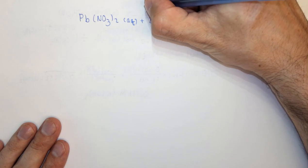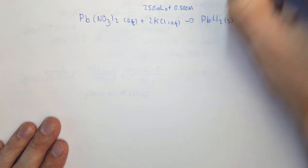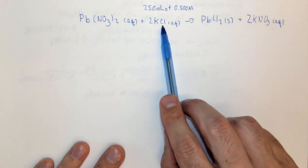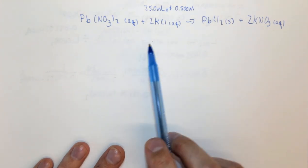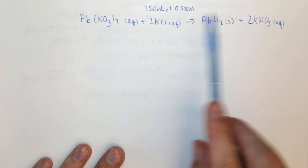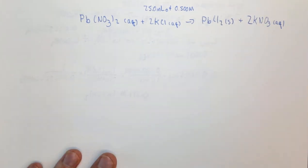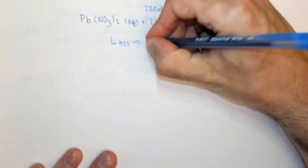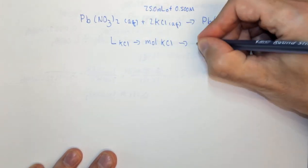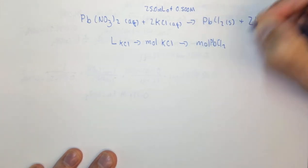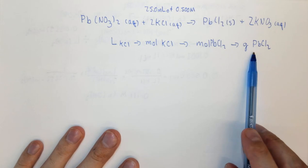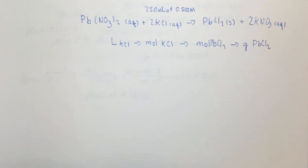We have 25 mL of 0.500 molar KCl solution, and excess Pb(NO₃)₂—which means we don't have to worry about it; KCl is the limiting reagent. The plan: start with liters of KCl, convert to moles of KCl, then to moles of PbCl₂, and finally to grams of PbCl₂. Since PbCl₂ is a solid we can filter it off, dry it, and record its mass.